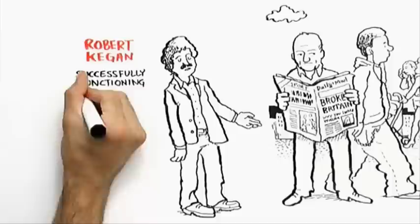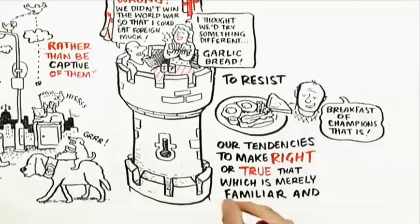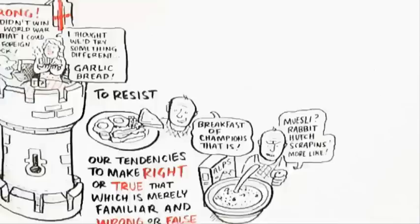The developmental psychologist Robert Keegan argues that successfully functioning in a society with diverse values, traditions, and lifestyles requires us, in his words, to have a relationship to our own reactions rather than be captive of them. I quote, to resist our tendencies to make right or true that which is merely familiar and wrong or false that which is only strange.